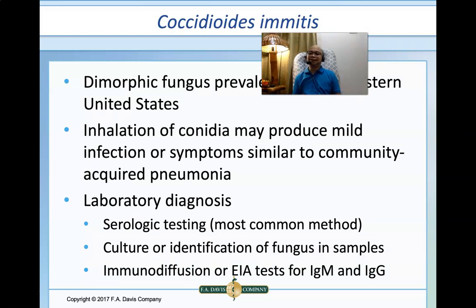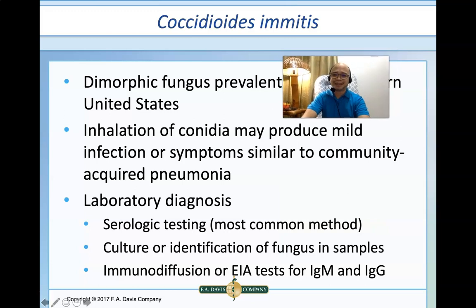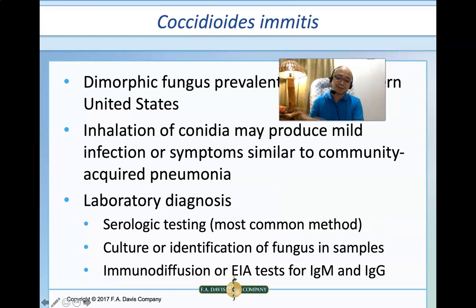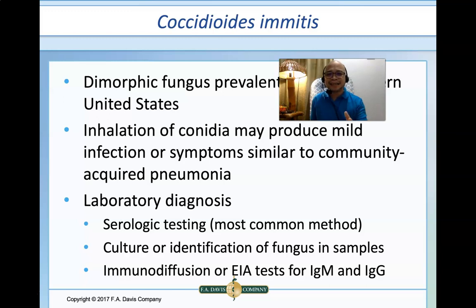Another example of fungal infection is Coccidioides immitis, also a dimorphic fungus. The mode of transmission is inhalation of coccidiospores. It may produce mild infection or symptoms similar to community-acquired pneumonia. Lab diagnosis most commonly uses serologic tests; immunodiffusion or enzyme immunoassay for IgM and IgG are easier to perform and safer than culturing, which is dangerous. That concludes the overview of common parasites and fungi for which serologic assays can be utilized. This has been Dr. Sipachay Bassid — God bless everyone and stay safe.